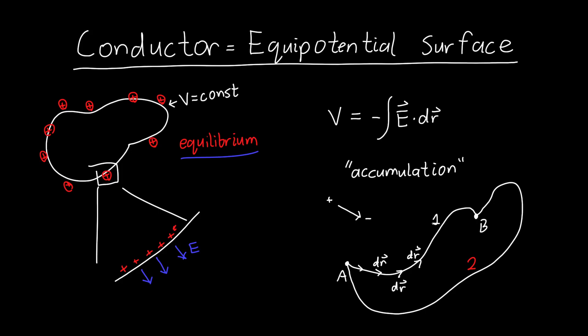And so going back to our conductor over here, what happens when I take the integral from this point, I'll call it A, to this point B, both on the surface? Well, all my drs point in this direction. So they point in this direction. But my electric field is always pointing perpendicular to that. So E dotted with dr is always equal to zero. So that means that the integral of the electric field, or the voltage difference between A and B, is equal to zero. Or the voltage at point A is equal to the voltage at point B. The electric potentials are equal.